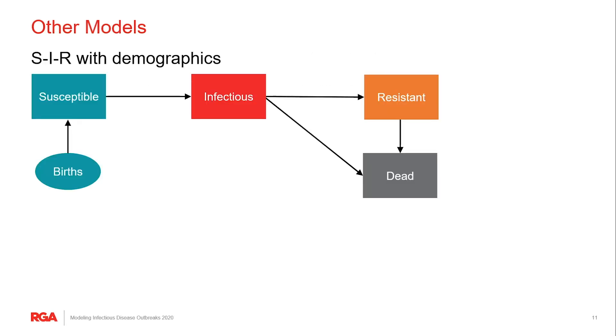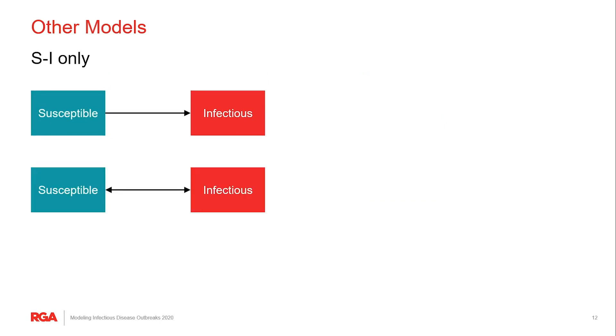For example, this model allows us to track births and deaths. Tracking mortality is important for deadly diseases, and then births become important if a disease is expected to persist in a population over a long period of time. Some infections can become chronic, like HPV. So once acquired, the patient will remain infectious for life.